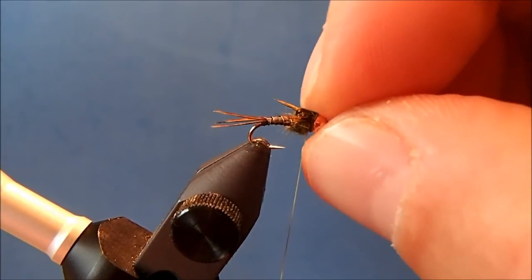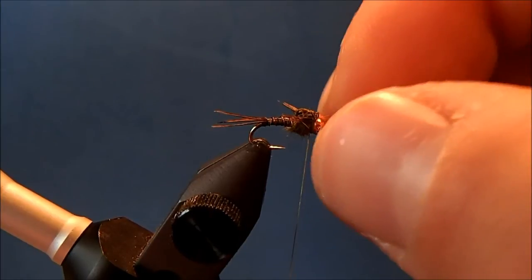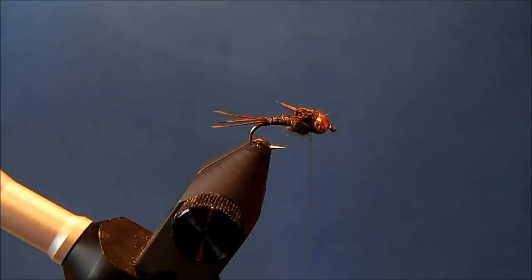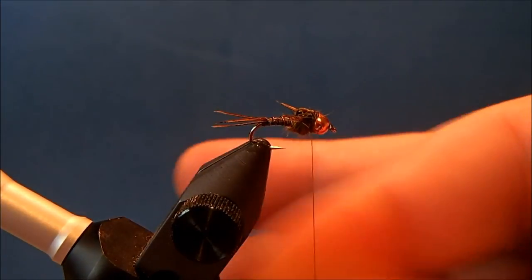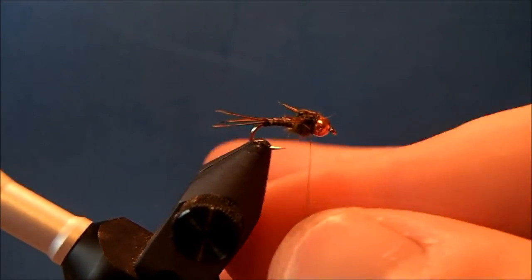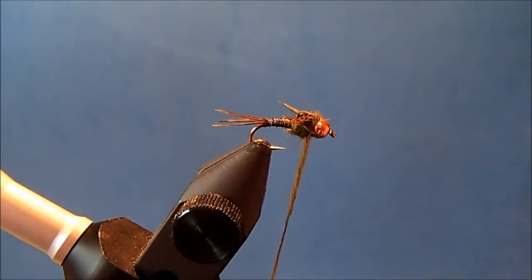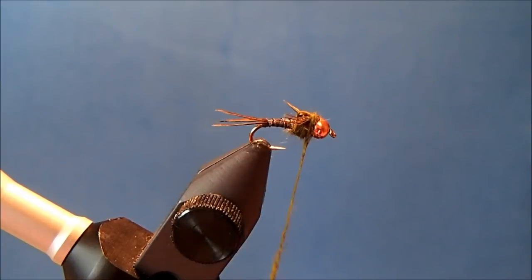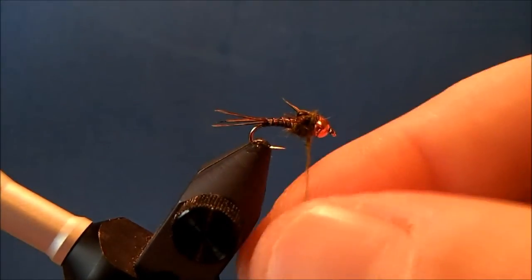Now I'll come back and make sure my legs are positioned—that they didn't move on me. The final step is just a little bit more dubbing, a very fine amount to cover your threads. Just a small pinch there, maybe two wraps. I'm going to pull the rest of this off.